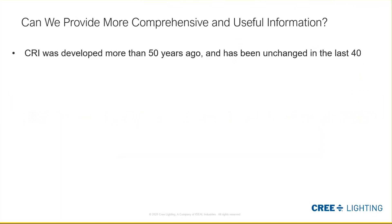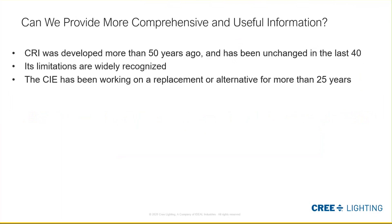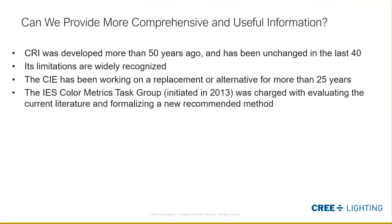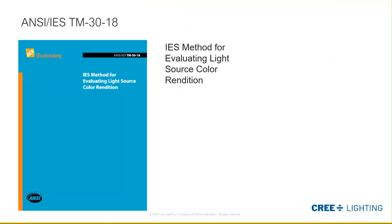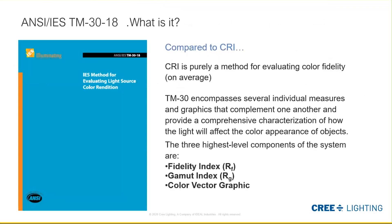CRI has been around about 50 years and is relatively unchanged for the last 40. The limitations were widely recognized and we've been talking about improvements for the last 25 years. LEDs changed things significantly. In 2013, an IES color metrics task group was initiated and charged with evaluating the current conditions and formulating new methods. The result is what they call TM30 — actually an ANSI standard, with the first release in 2015.